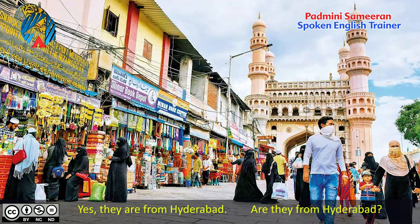'Yes, the weather is hot' — 'Is the weather hot?' 'Yes, the vegetables are fresh' — 'Are the vegetables fresh?' 'Yes, they are from Hyderabad' — 'Are they from Hyderabad?' In all these sentences, all you have to do is reverse the order: 'she is' becomes 'is she,' 'he is' becomes 'is he,' 'they are' becomes 'are they,' 'I am' becomes 'am I,' 'you are' becomes 'are you,' 'it is' becomes 'is it.'